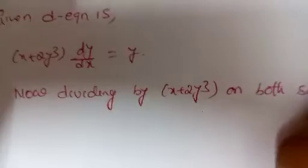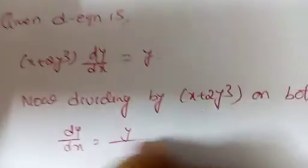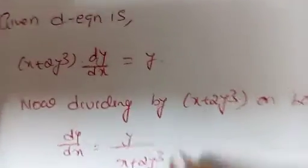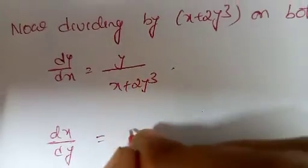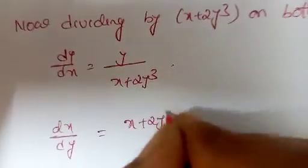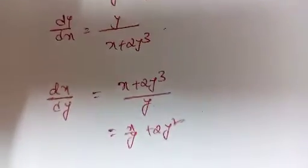Now dividing both sides by (x + 2y³), we get dy/dx = y / (x + 2y³). This implies dx/dy = (x + 2y³) / y = x/y + 2y².